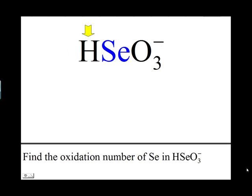Look at the H atom. The oxidation number of hydrogen in an ion or compound is positive 1. Now write a plus sign.